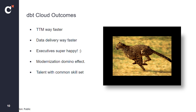Overall, as we moved and modernized, our time to market was way faster, and data delivery and job time went way faster, which made our executives super happy. That new real-time project was recently given a Pacesetter Award at the company. There's also been a modernization domino effect — as we've proven how fast we can go, we've been able to identify other bottlenecks and put other teams on the hook for improving their processes. With dbt Cloud and the code-first philosophy, we're able to attract and build talent with common industry skill sets such as Git, SQL, and Python, keeping our pipelines and jobs running faster than ever.